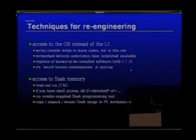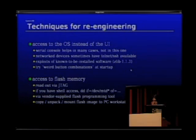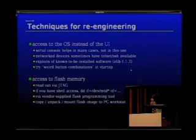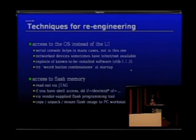What we actually want is access to the OS. A serial console helps in many cases — not in this one. Network devices sometimes have Telnet or SSH available. Also, sometimes software installed is known to be exploitable. This phone ships with libpng 1.1.3, which has at least two documented exploitable vulnerabilities. It would be feasible to write a libpng-compressed PNG image containing shellcode to exploit the library via the Opera web browser, which links against libpng.